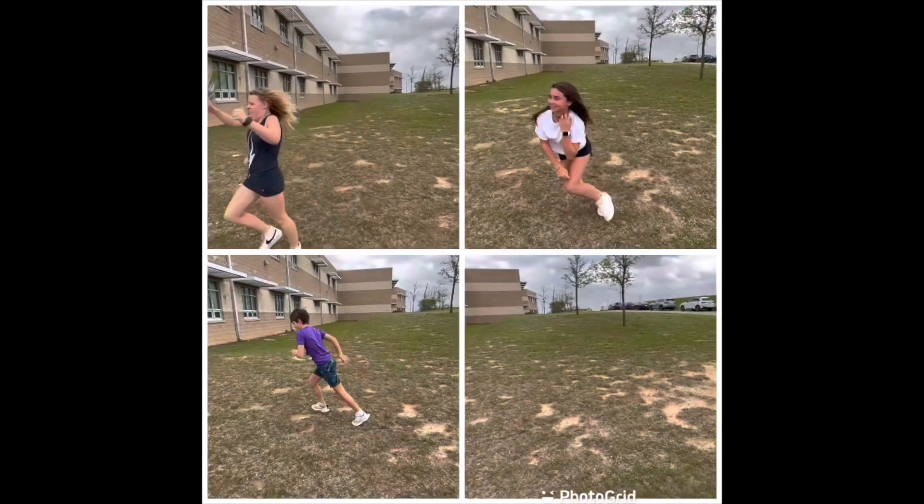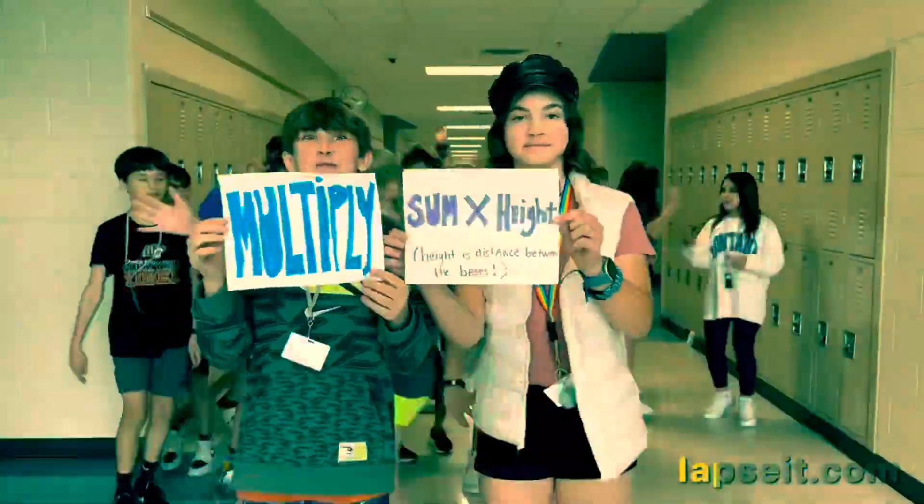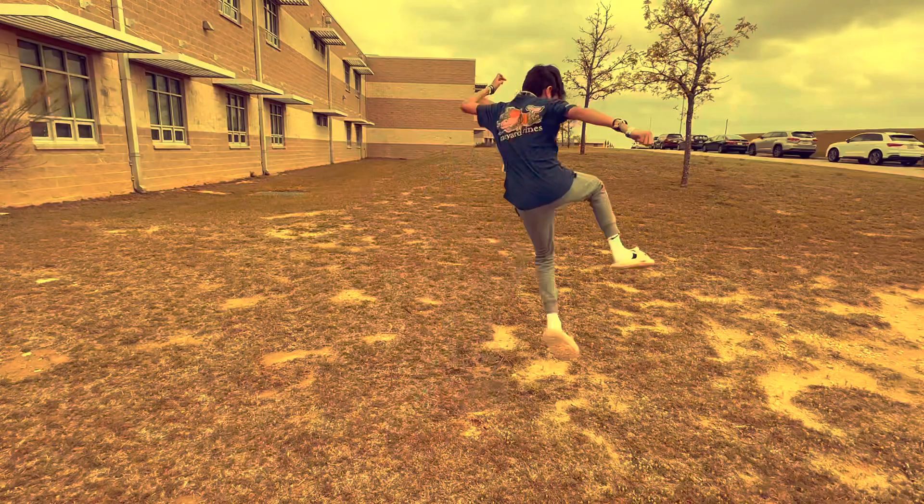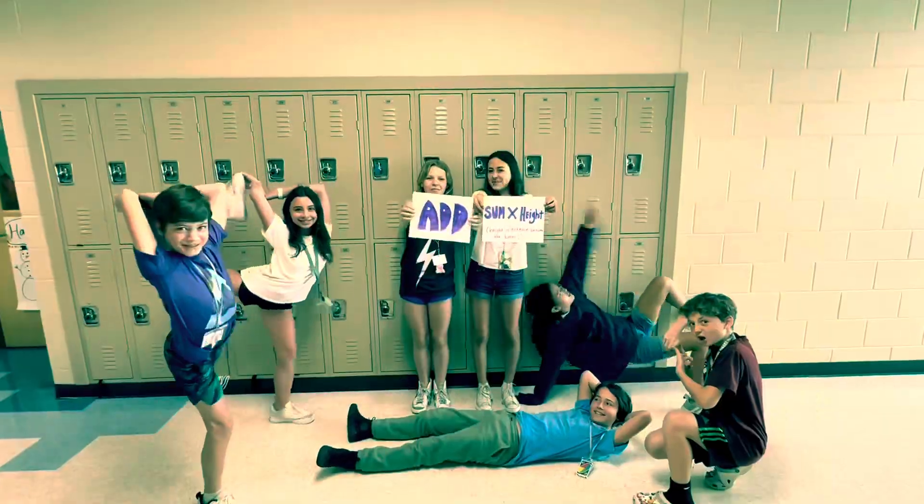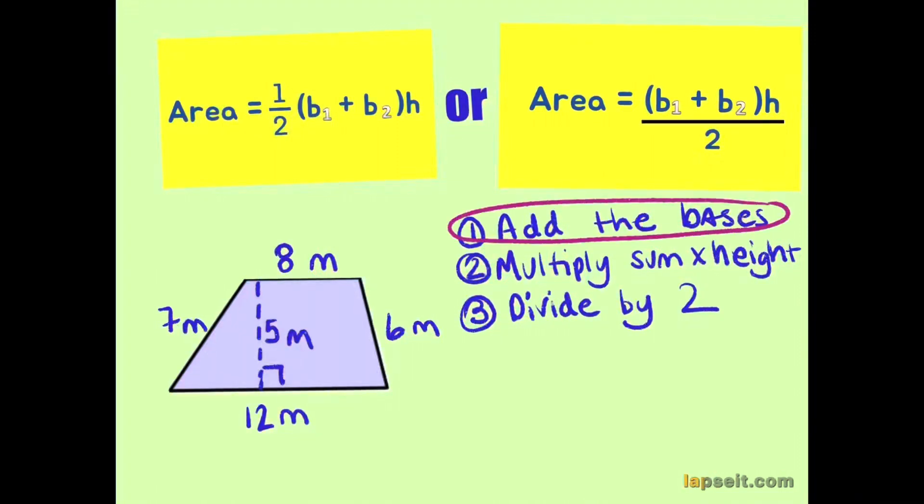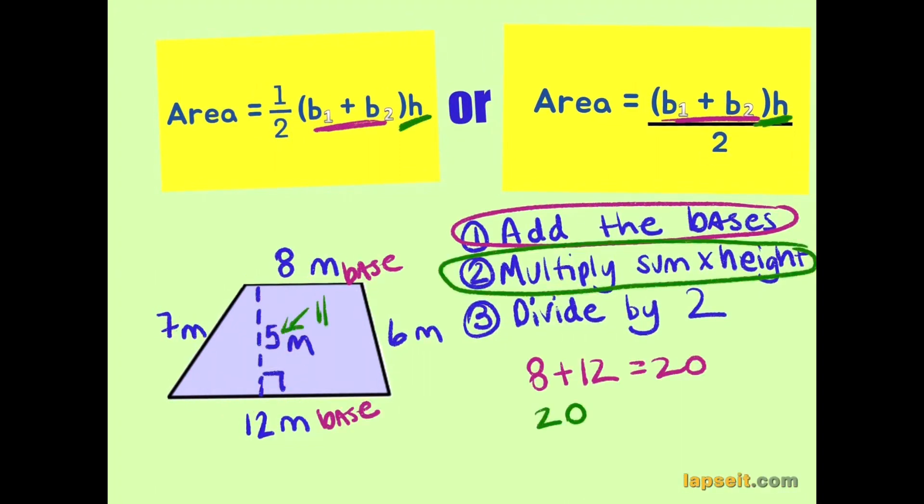Say it. Area of trapezoids. Three things you do: Add, multiply, then divide by two. Say it. Area of trapezoids. Three things you do: Add, multiply, then divide by two. We'll be right back.